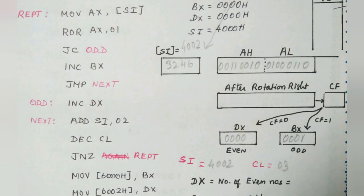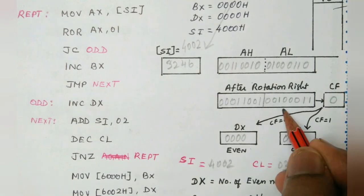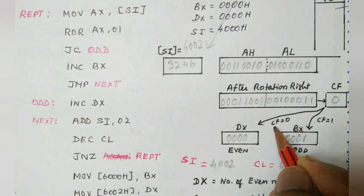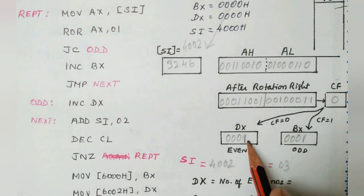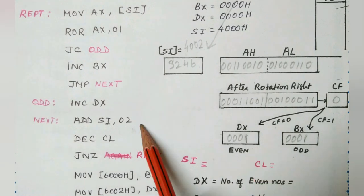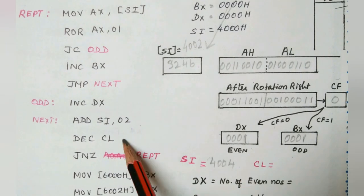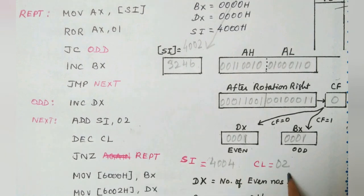Here the LSB is 0. That is moved to the carry flag. So CF equals 0 now. Then we go for incrementing the DX register. Earlier it was all 0s, now it is incremented. Then we go for third iteration by incrementing by 2. Now the source index register becomes 4004. As well as the CL was earlier 3, now it is decremented by 2.